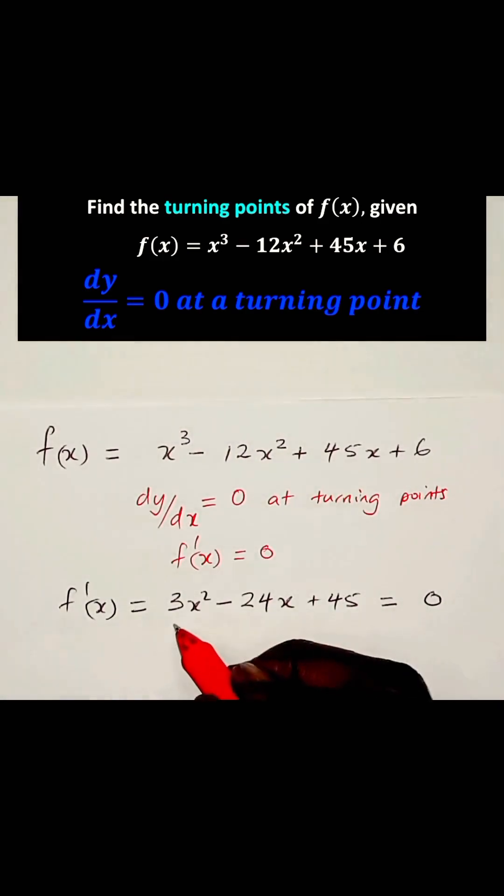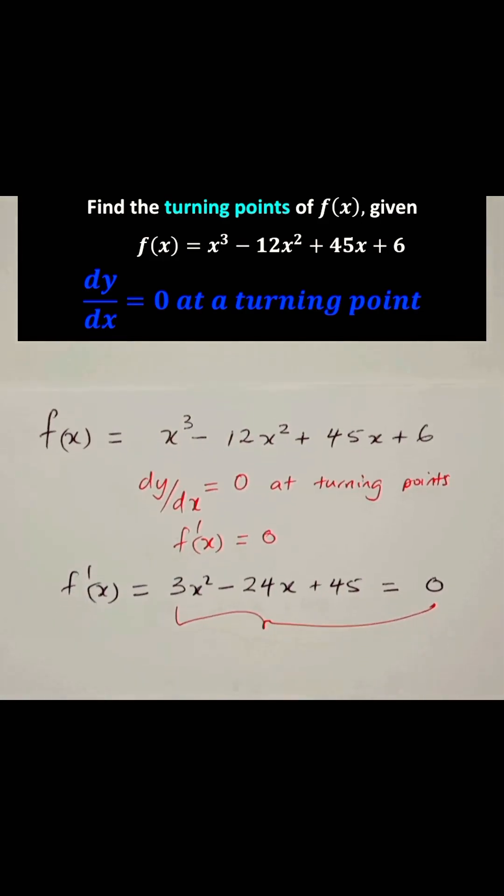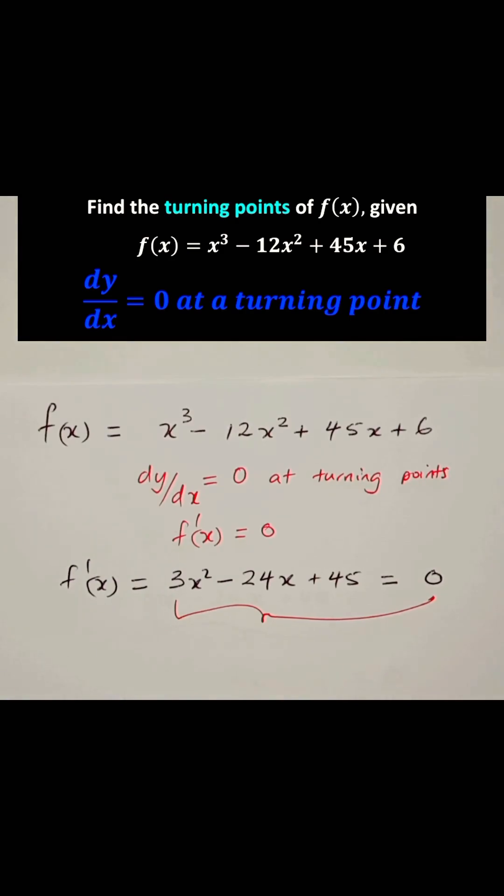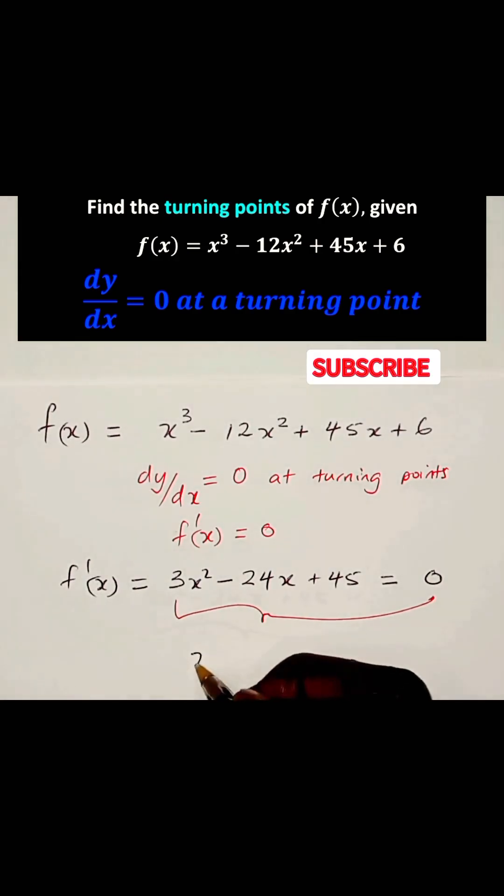Now, let's solve this quadratic equation to find the values of x at those turning points. On this equation, you can divide throughout by 3 because 3 is a common factor. You divide this term by 3, you get x². You divide this by 3, you get -8x + 15, that gives us 0.